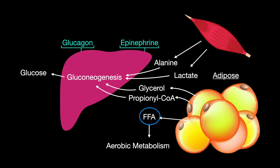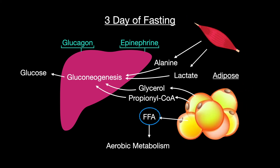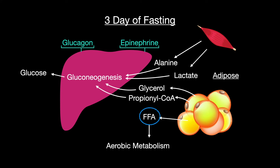Red blood cells, lacking mitochondria, cannot use ketones for fuel. After three days of not eating, gluconeogenesis is carried out by catabolizing proteins from your tissue, like muscle, to provide your blood with fuel.